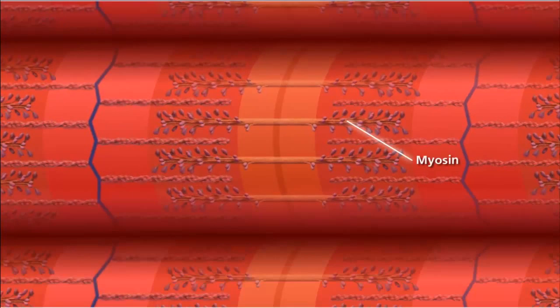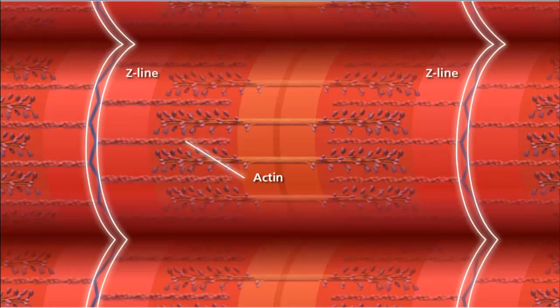The thick filaments are myosin, which are anchored at the center of the sarcomere, called the M-line. The thin filaments are composed of the protein actin, which are anchored to the Z-lines on the outer edges of the sarcomere.